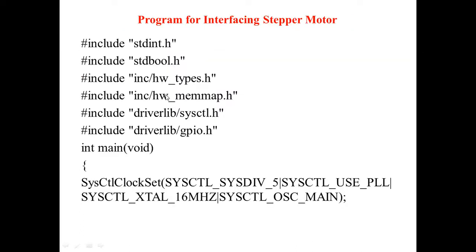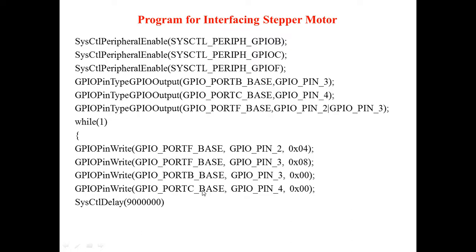Now going directly to the program: as usual you have to add header files. Since we are controlling only GPIO pins, we need to include the header file up to gpio.h. The first line is SysCtlClockSet to set the clock for the system. Next, we enable the peripherals: SysCtlPeripheralEnable for GPIO B, GPIO C, and GPIO F.